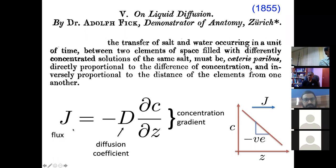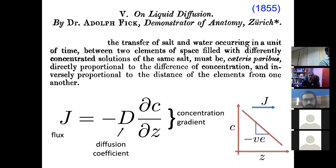To make the flux positive you have to have this minus sign to cancel out the fact that the gradient is negative, because diffusion according to Fick happens down a concentration gradient. This is Fick's law of diffusion, which we use and teach routinely, and it was from 1855. It has its origins in many similar laws where the flux is proportional to a force, and I'll come back to those towards the end of the lecture.